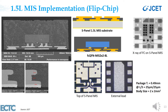A flip chip RF switch tailored for mobile RF front-end applications is implemented with a 1.5-layer MIS substrate. A 1.5-layer substrate is essentially a two-layer but without the last molding step. The key benefit of a 1.5-layer MIS substrate is that it provides a tall and large copper landing area for connecting the flip chip IC die. Notice the resemblance of this 1.5-layer MIS flip chip package to a standard fan-out wafer-level package, for example EWLB.